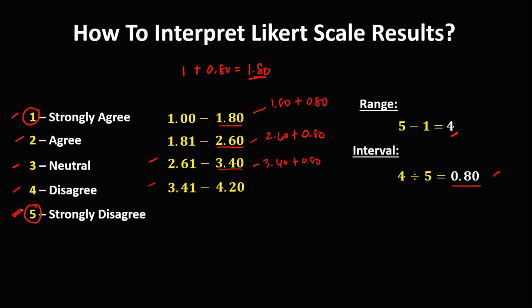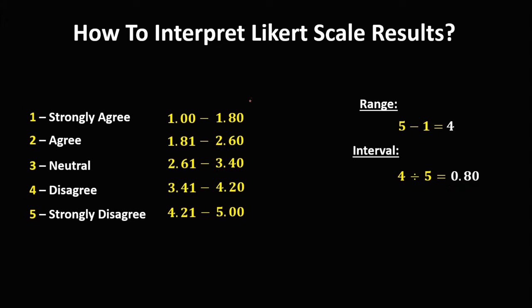And the last scale, since this one is 4.20, the lower limit is 4.21. And the upper limit is 5.00. So this is now the complete Likert scale.